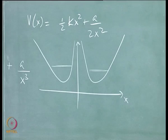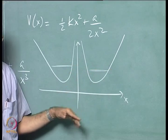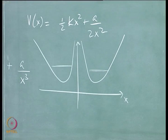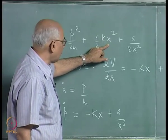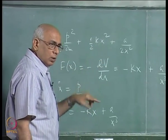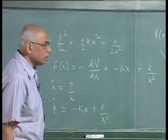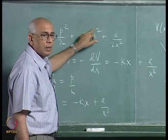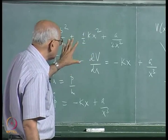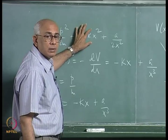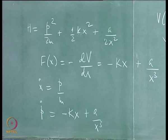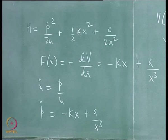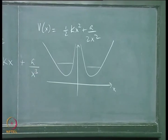Even though the potential does not look parabolic at all, the oscillations are independent of the energy. However, if you restrict to potentials of the form of a single power of x, then the only isochronous oscillator is the harmonic oscillator — the quadratic. More complicated functions can achieve isochronicity, and in fact there are infinitely many such potentials in general.